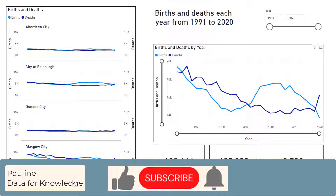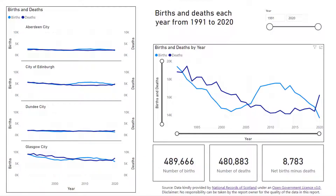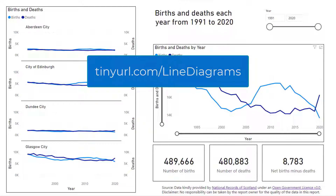In this video I will walk you through an introduction to navigating line diagrams, using a report which shows the births and deaths for four cities in Scotland. This video looks at some of the navigation available for line diagrams, but please bear in mind this is one example and there could be more information in any line charts you have received than shown here. The reports used in this video can be found at tinyurl.com/line-diagrams and the link is also in this video's description.